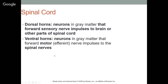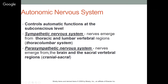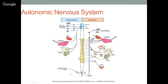The autonomic nervous system controls automatic functions at a subconscious level, divided into sympathetic and parasympathetic systems. Sympathetic nerves emerge from the thoracic and lumbar vertebral regions — the thoracolumbar system, from the center of the body. Parasympathetic nerves emerge from the brain and sacral vertebral regions — from the head and sacrum, at the ends of the body. So sympathetic is central; parasympathetic is at the periphery.